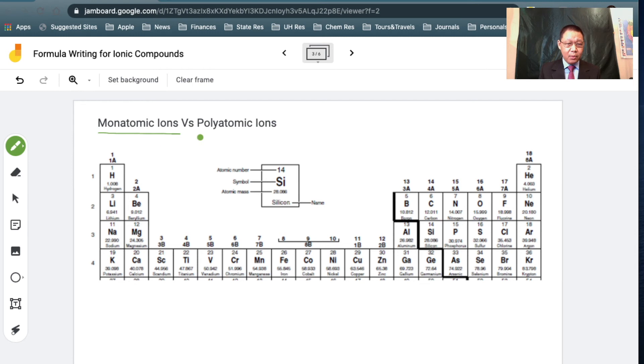Now, I want to differentiate for you a polyatomic ion. So what's the difference between the two? Well, polyatomic means you have more than one. Poly means more than one.